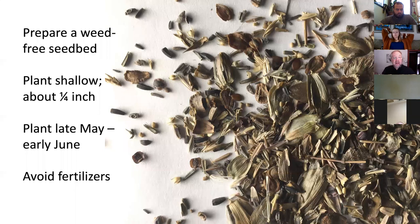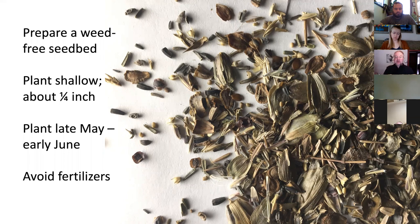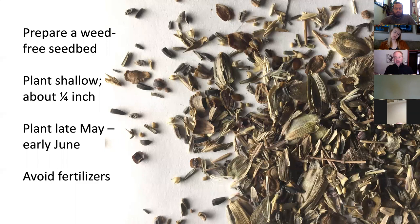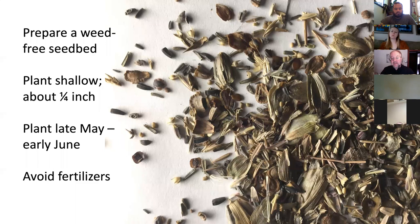A weed-free seedbed is important. Plant shallow — about a quarter of an inch. You can plant in late May or early June. Native prairie plants are warm season plants, whereas the grass in your yard is a cool season plant that greens up early, goes dormant in the hottest part of summer, and greens up again in fall. Avoid fertilizers — native plants do not need fertilizer. They do just fine on their own. In fact, some of them will grow in the worst places. We stopped at a roadside in Macoupin County and found a rare blazing star growing in almost pure gravel.